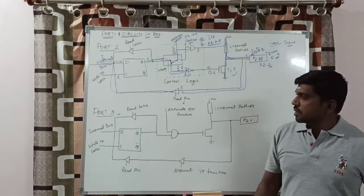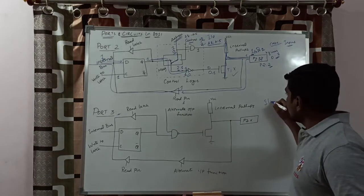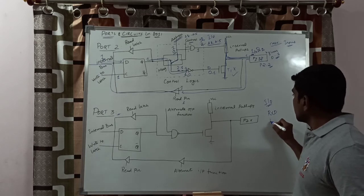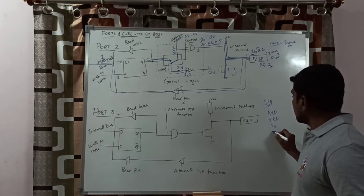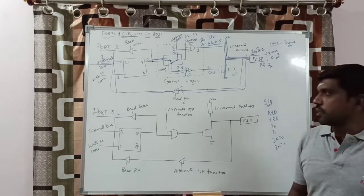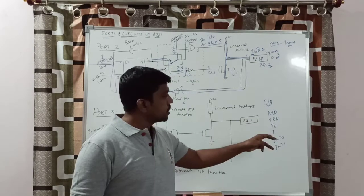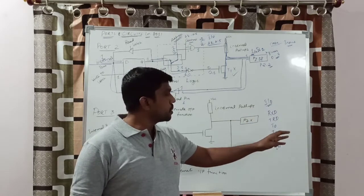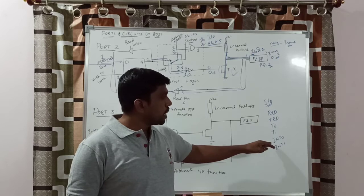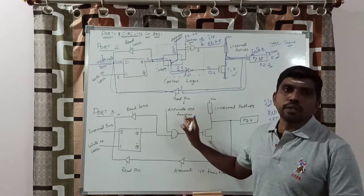Now we go for the function of port 3. This is a simple structure. Port 3 also performs a dual function. The first function is to act as input or output. The alternate functions are: receive data (serial input), transmit data (serial output), T0 and T1 representing timer 0 and timer 1, and INT0 and INT1 which are interrupt signals. Based on which alternate function you need, you can choose the corresponding function using the alternate function input.